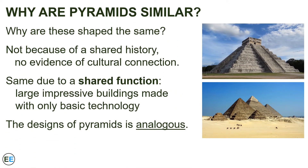Why are the pyramids in South America and North Africa so similar? Why did two different cultures create buildings that have basically the same shape? It wasn't because of a shared history, because there's no evidence of a connection between these two cultures. These buildings are the same due to a shared function — they're both large impressive buildings made with only basic technology. If you only have manual labor and stone but you want to make a big impressive building, you make a large base and taper it upwards to maintain structural stability. The design of these pyramids is analogous: they are similar because they're performing the same function under the same constraints.